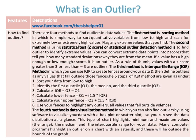Step three: calculate the IQR by subtracting Q1 from Q3. Step four: calculate the lower fence, which equals Q1 minus 1.5 times the IQR. Step five: calculate the upper fence, which equals Q3 plus 1.5 times the IQR. Step six: use your fences to highlight any outliers — all values that fall outside your fences.